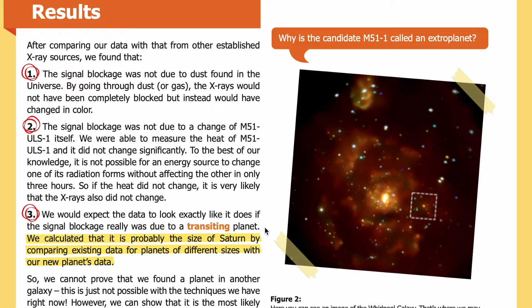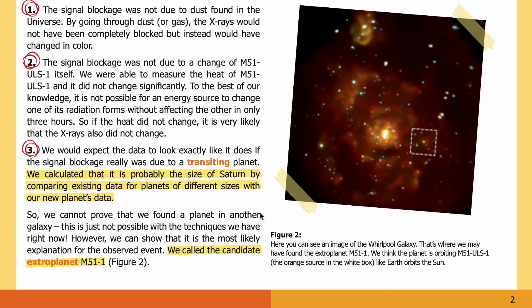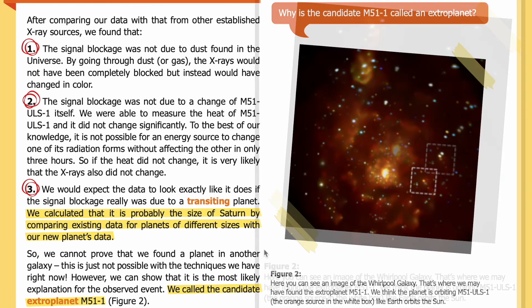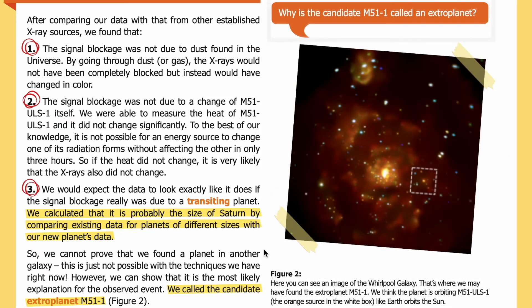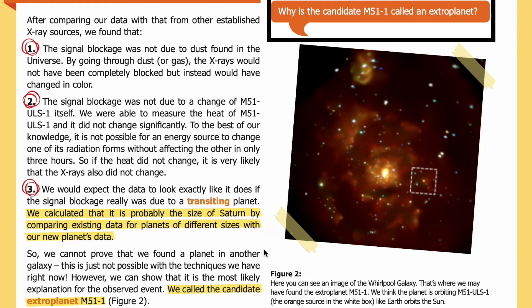Three, we would expect the data to look exactly like it does if the signal blockage really was due to a transiting planet. We calculated that it is probably the size of Saturn by comparing existing data for planets of different sizes with our new planet's data. We cannot prove that we found a planet in another galaxy — that is not possible with techniques we have right now — however, we can show it is the most likely explanation. We called the candidate extroplanet M51-1. In Figure 2, you can see the Whirlpool Galaxy, where we may have found M51-1, orbiting the orange source M51-ULS-1 in the white box.